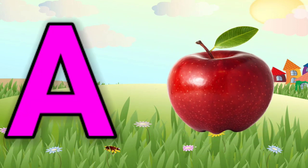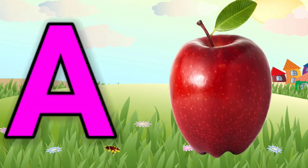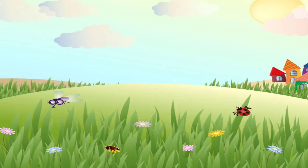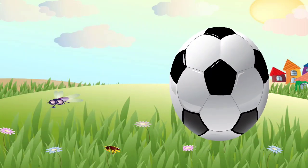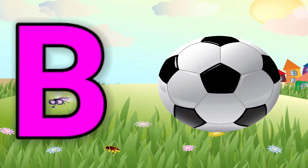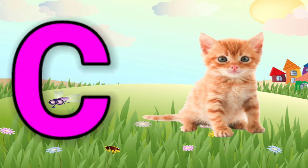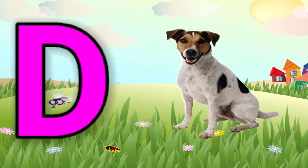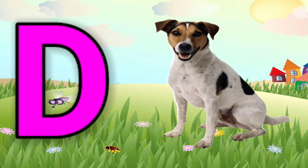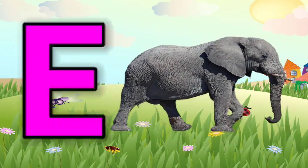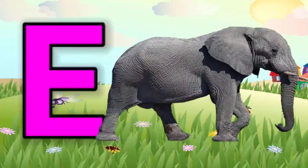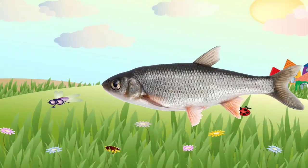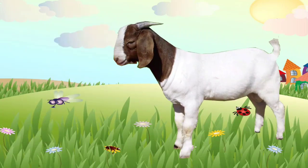A, A, A, A for apple. B, B, B, B for ball. C, C, C, C for cat. D, D, D, D for dog. E, E, E, E for elephant. F, F, F, F for fish. G, G...